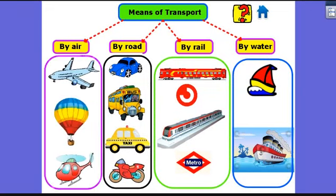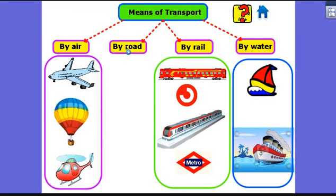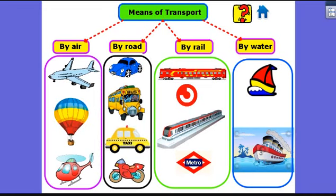By air we have the airplane, the hot air balloon, and the helicopter. By road we use cars, buses, and also motorbikes. By rail we have the big trains and the undergrounds — the undergrounds travel on the ground in the cities. And by water we have the smallest boats and the big ships.